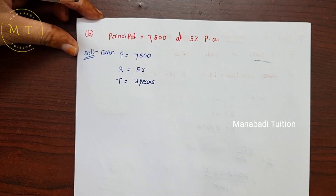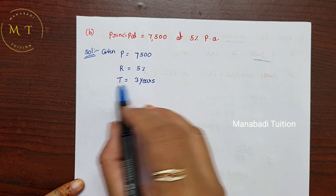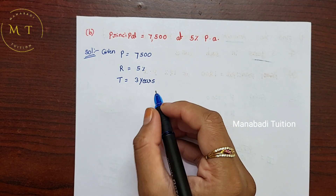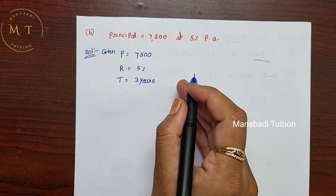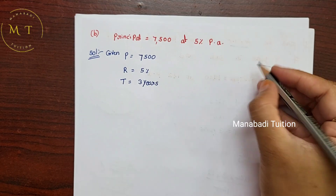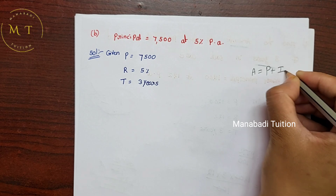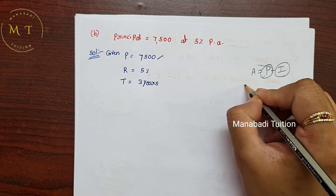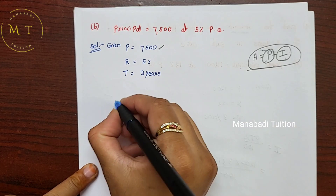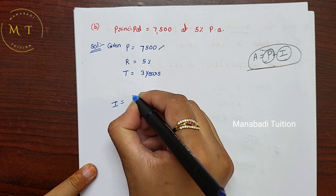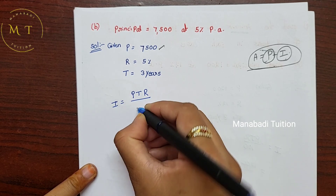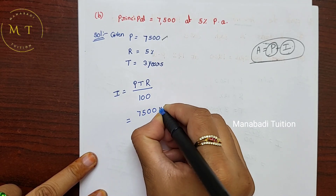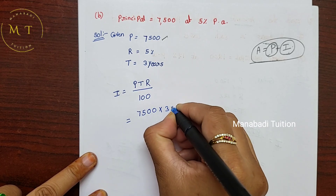Question 10: Principal is 7500 rupees, rate of interest is 5%, time is 3 years. P = 7500 and T = 3 years.